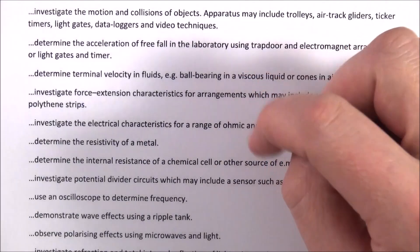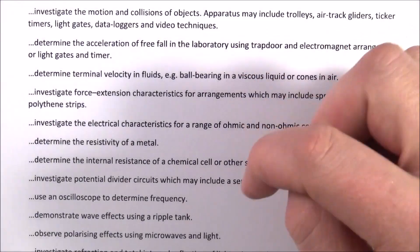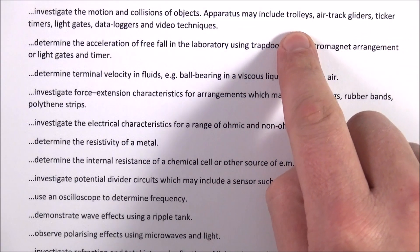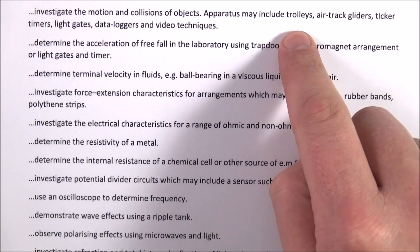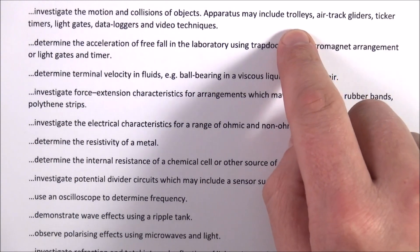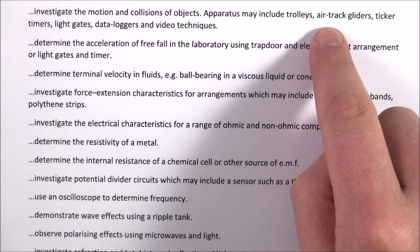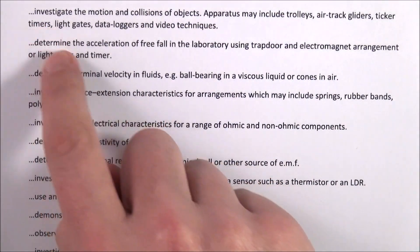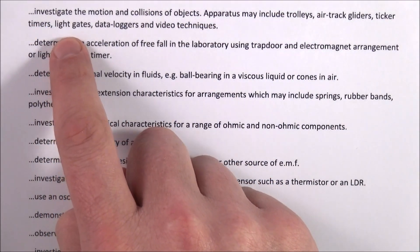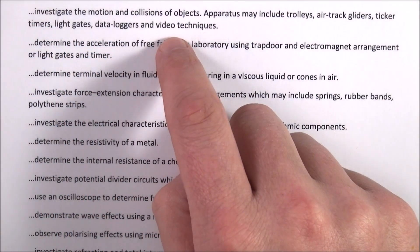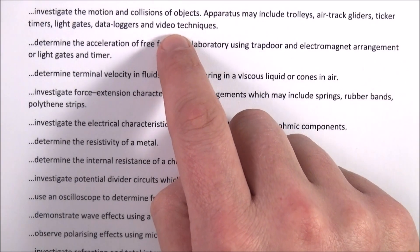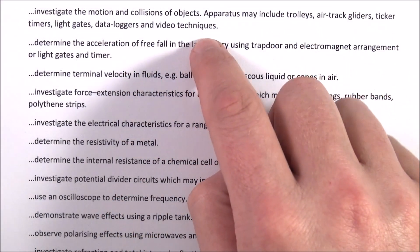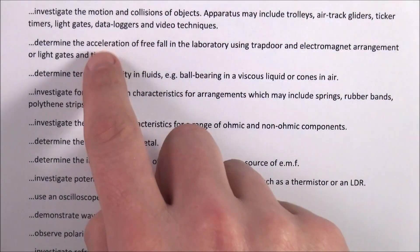There's a link to the document just below the video, but basically you need to know about how to look at collisions and motion of objects — so trolleys, air track gliders, ticker timers, light gates and data loggers — and also there are ways you can use video techniques to look at things frame by frame.